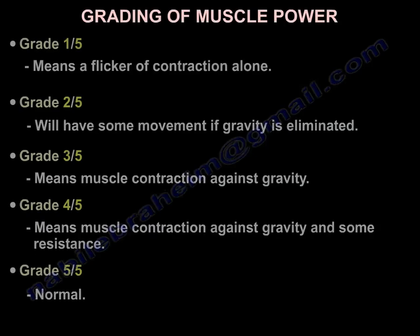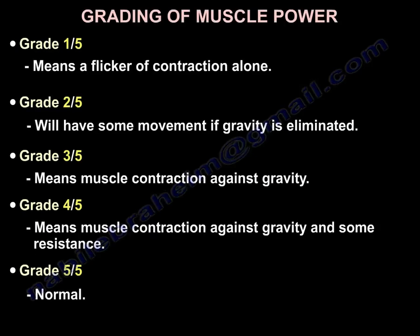Grading of muscle power: Grade 1 is a flicker of contraction. Grade 2 is some movement if gravity is eliminated. Grade 3 is muscle contraction against gravity. Grade 4 is muscle contraction against gravity and some resistance. Grade 5 is normal.